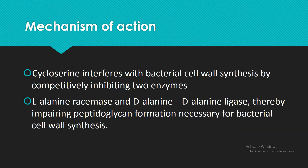Cycloserine is white to pale yellow in color, crystalline, and in powder form. Regarding the mechanism of action, which is very important to know: cycloserine actually interferes with bacterial cell wall synthesis. It interferes with the normal synthesis of the bacterial cell wall by competitively inhibiting two enzymes which are essential for normal bacterial cell wall synthesis.